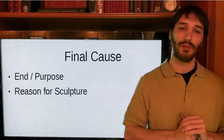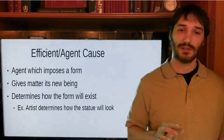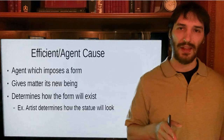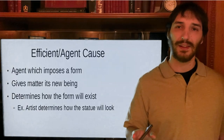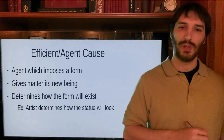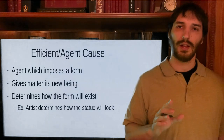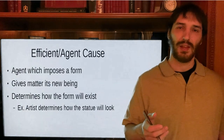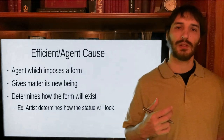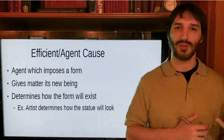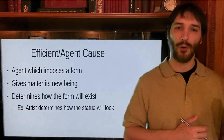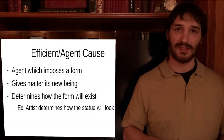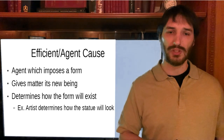Next is what we call the efficient cause. The efficient cause is the agent that imposes a form on the matter for the sake of an end. We can see that the purpose is in a sense both the first and the last cause. It's the first because when the efficient cause decides to make something, he has a purpose or a need. And after seeing that purpose or need, he develops the form which he places in the matter to attain the end he wishes to attain.